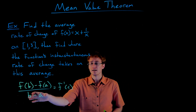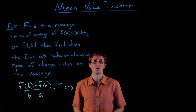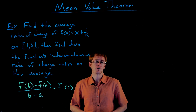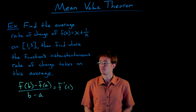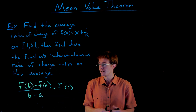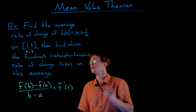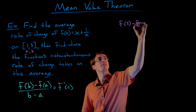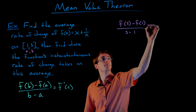First we have to calculate the average rate of change of our function and find its value over our interval from 1 to 3. Then we'll do some algebra — find the derivative of our function and figure out where the derivative takes on that value. Our interval from a to b is from 1 to 3, so we're going to evaluate (f(3) − f(1)) / (3 − 1).